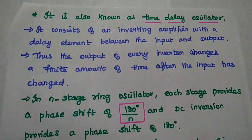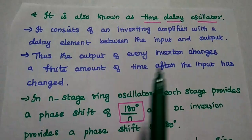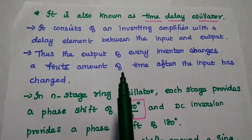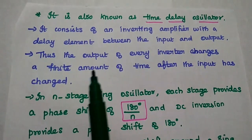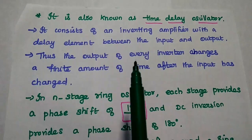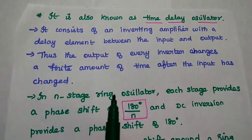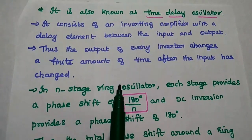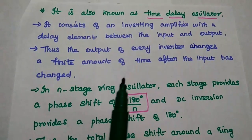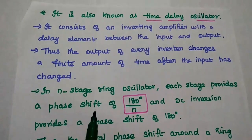Ring oscillator is also known as time delay oscillator because it consists of an inverting amplifier with a delay element. Here the capacitance can be used as a delay element between the input and output. Thus the output of every inverter changes a finite amount of time delay after the input has changed.